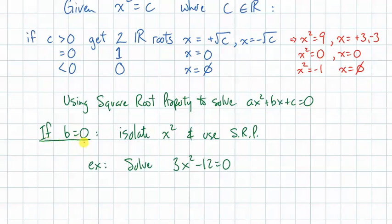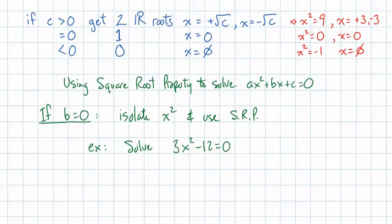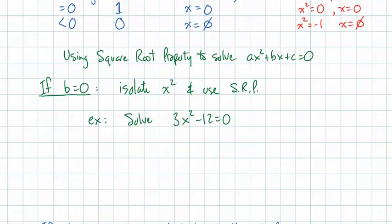One is, if the b value is 0, what we'll do is we'll isolate x squared, and we'll use the square root property. Here's an example. 3x squared minus 12 equals 0. Notice how it has an a value and a c value, but not a b value. We can approach this problem actually two ways.